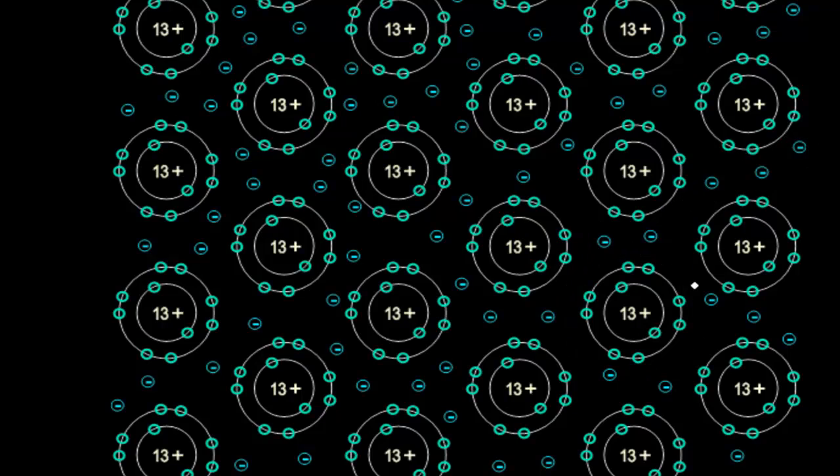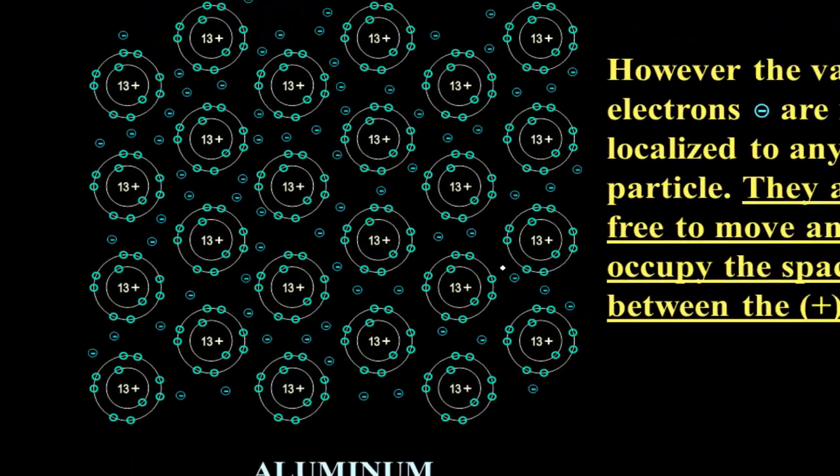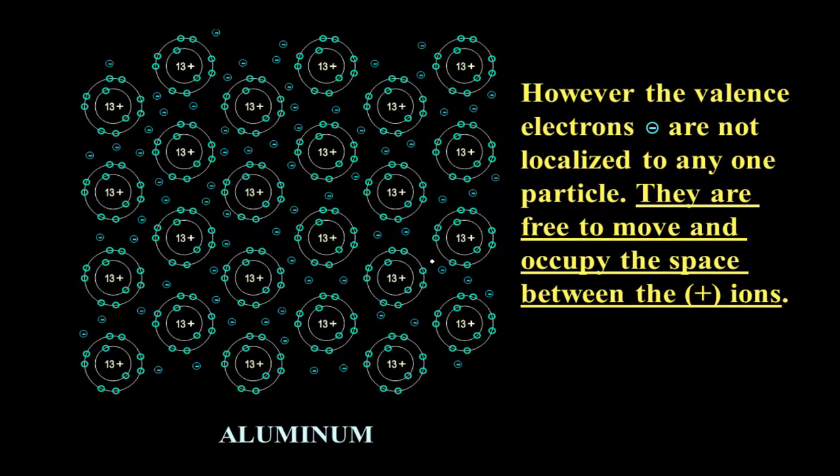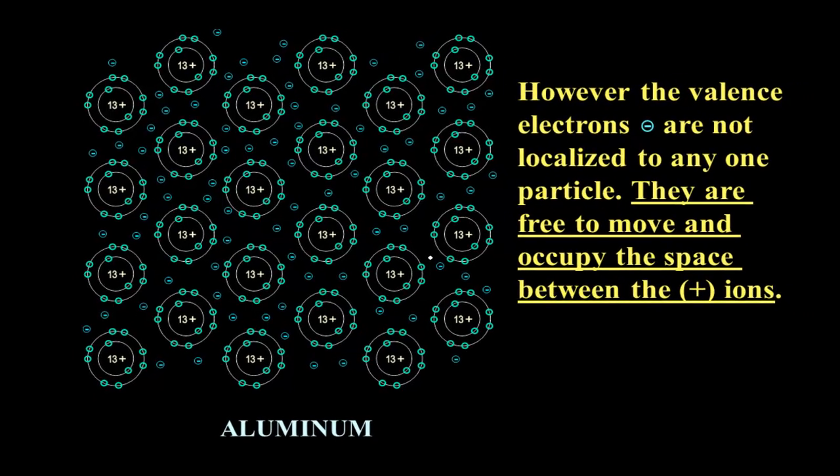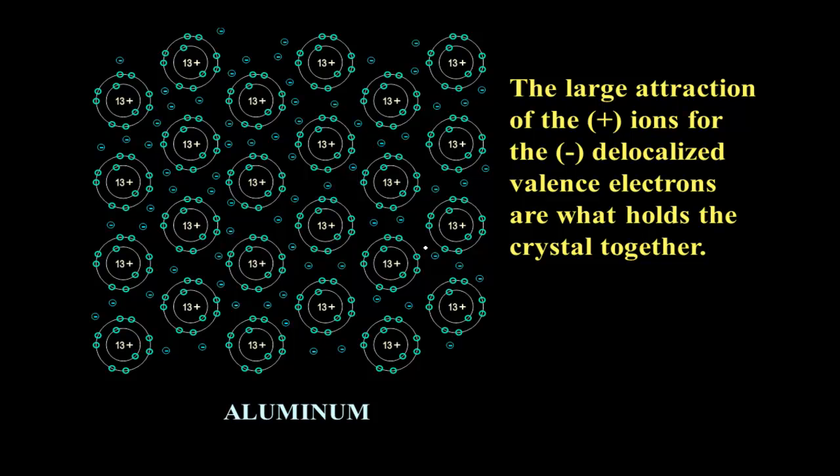And so the valence electrons are not localized to any one particle. They are free to move and occupy the space between the positive ions. And so similar to the electrostatic attraction that holds the ionic crystal together, we have this attraction of opposite charges that are holding the metallic crystal together.